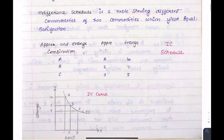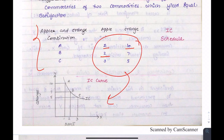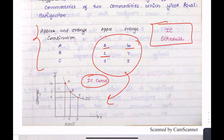Now let's look at the shape of the Indifference Curve. We have given a schedule: 1 apple and 10 oranges at one point, 2 apples and 7 oranges, and 3 apples and 5 oranges. Using this data, we have made an IC curve — the data is the IC Schedule and the curve is the Indifference Curve. All these points A, B, C represent equal satisfaction, so at any point on one IC, the satisfaction of the consumer will remain the same.